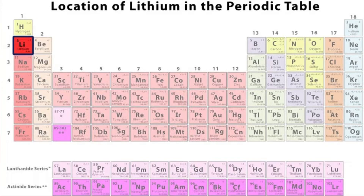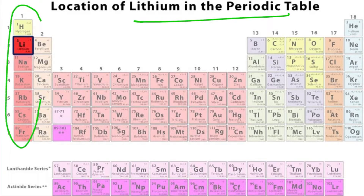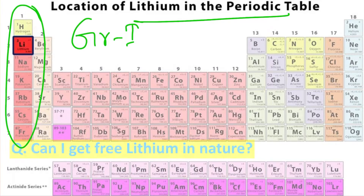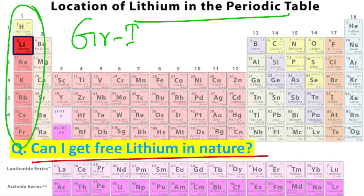Where does lithium reside in the periodic table? It resides in the extreme left, that is Group 1. It is the lightest metal in the periodic table and belongs to the Group 1 metal category. Consequently, can we get free lithium in nature? Obviously no, because Group 1 metals are extremely reducing and they prefer to remain in the +1 oxidation state. So lithium also remains in the +1 oxidation state.